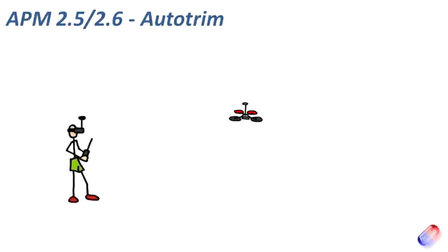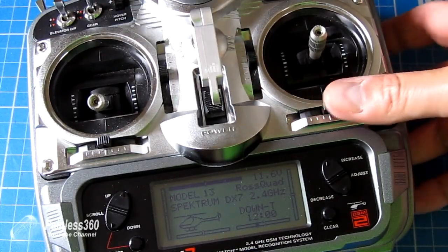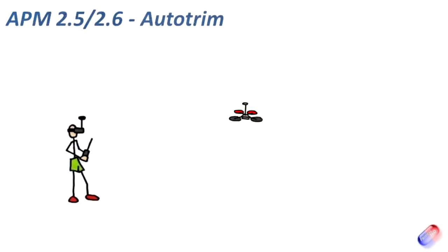For other boards there are a couple of things that always present challenges. The first is what's called trimming, and that is typically done via switches on the transmitter which are clicked left or right until the model hovers in the air. The challenge is that for some boards putting the trims in actually confuses it as you click into different modes. For example, if you're using something like a KK 2.0 board you don't really want to use the trims for the auto level.